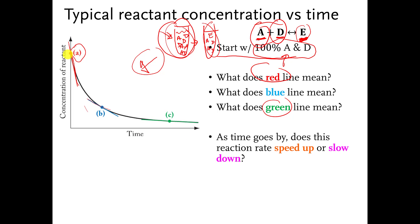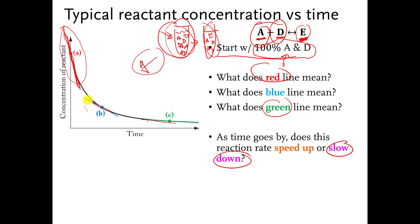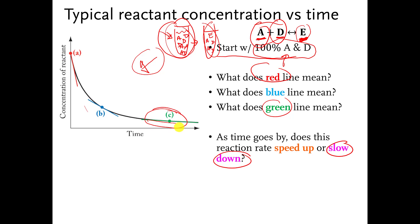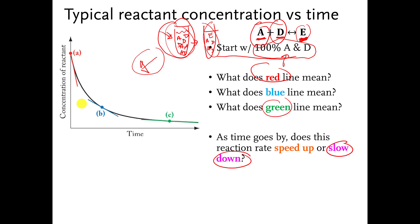The answer is that the reaction is slowing down as time goes by. The steepness of these lines represents the speed of the reaction. Over here at the beginning, it's very steep, so the reaction is happening very fast — A is disappearing very fast. A little later, it's not as steep, so A is disappearing not quite as fast. And even later, the slope is even less steep, so A is disappearing more slowly than before.